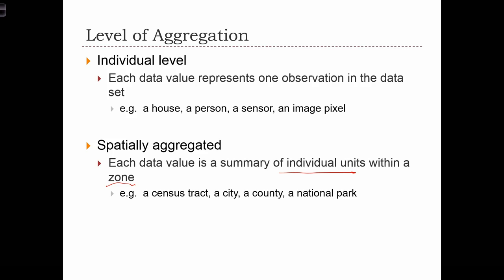A lot of you are aware of this type of data already. All of the census data that we are able to use or report on is aggregated data. The census will never release data about individual respondents because that violates the privacy of those people filling out the survey. What they will do is release a summary of data for all the people living within each census tract in a city — so rather than knowing my income and my neighbor's income individually, they will report on the average income level of people living in that census tract.